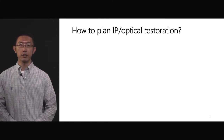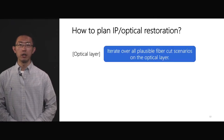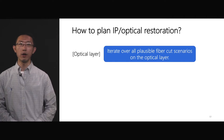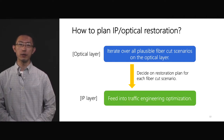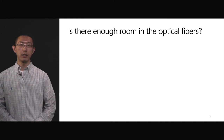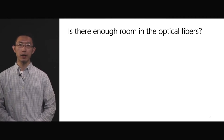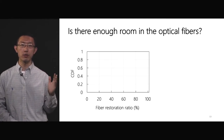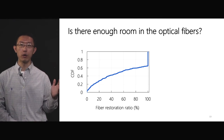The next question is, how to plan IP optical restoration for ARROW? A straightforward solution is to separate the optical layer from the IP layer. By iterating over all plausible fiber cut scenarios on the optical layer, we calculate the restoration plan for each scenario that maximizes the total restored capacity in the offline manner. Then we feed this per-scenario restoration plan into the traffic engineering formulation to optimize traffic flow allocation. To quantitatively answer whether there is enough room in the optical domain, we calculate the restoration ratio of each fiber in a large-scale WAN and plot the cumulative distribution function of restoration ratio for all fibers.